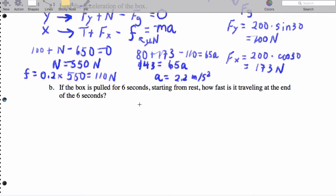And for B, if the box is pulled for 6 seconds starting from rest, how fast is it traveling at the end of 6 seconds? V equals AT plus V_naught. That's going to be V, which is what we're solving for, and that's going to end up being 13.2 meters per second.